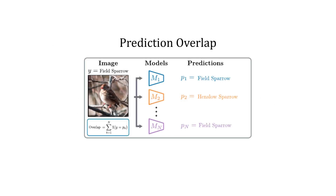Our first proposed difficulty metric is called prediction overlap. Given predictions from n distinct models, we assign a difficulty to each image based on the number of incorrect predictions.